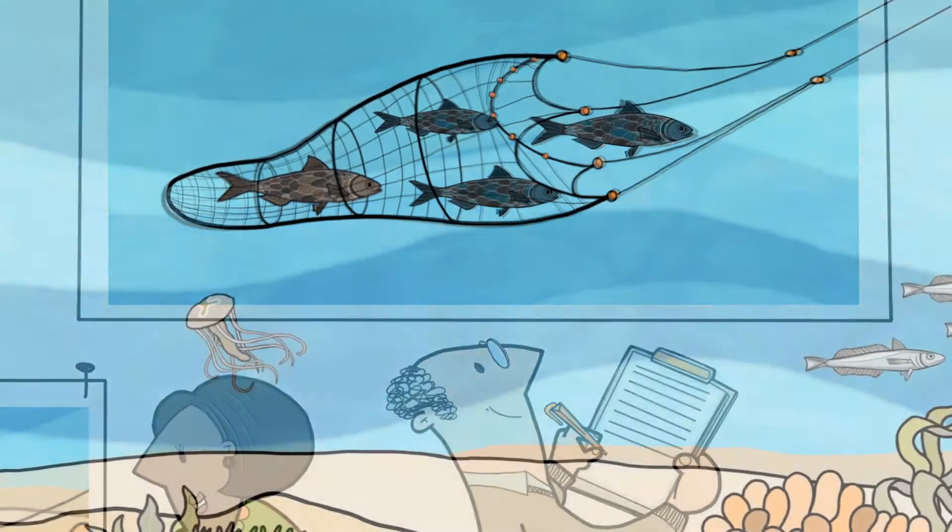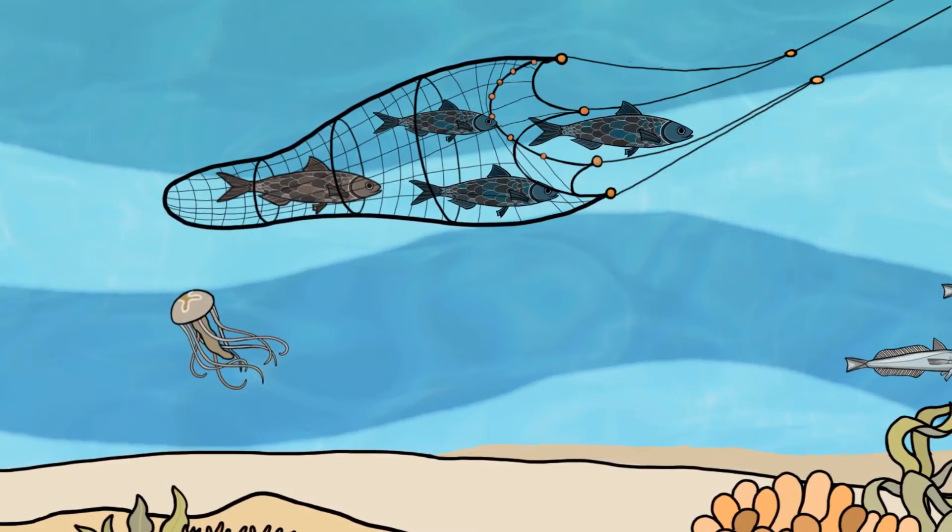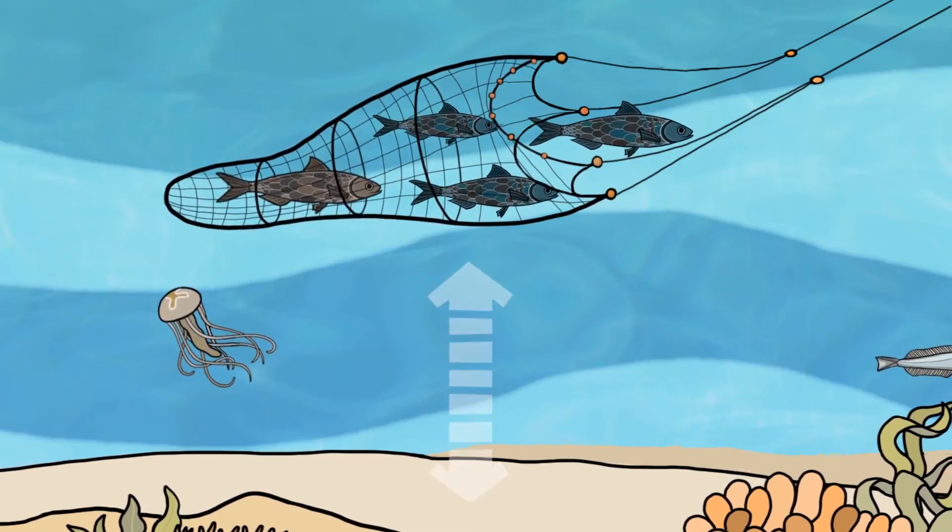Pelagic trawl nets, for example, are pulled through open water. They have little impact on the seabed because the nets usually do not touch the ocean floor.